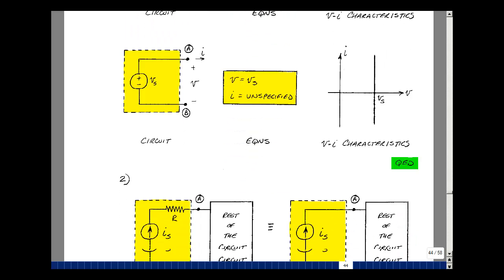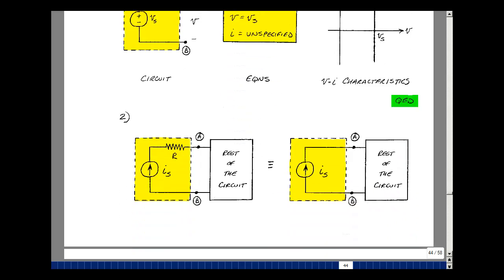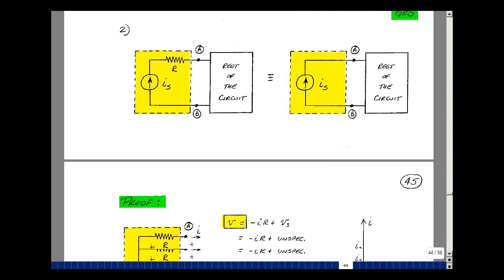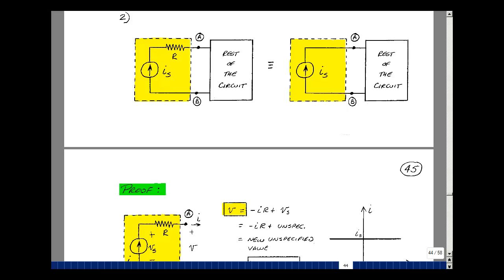Now if there's a property like that for voltage sources, there'll be also one for current sources. And again, this is the idea of duality in circuit theory. Let's state the theorem, and then we'll take a look at how to prove it. If I have a current source with anything in series with it, in this case, say resistance R, I can replace that by just simply the current source itself.